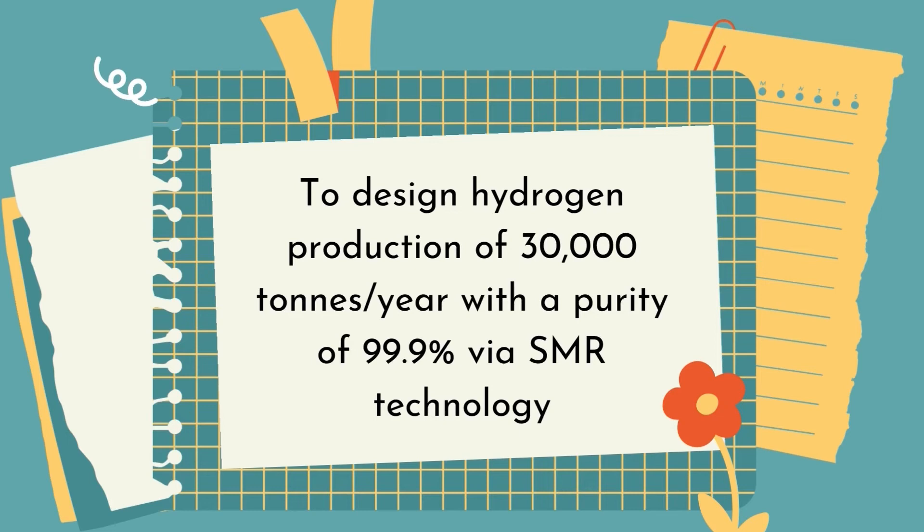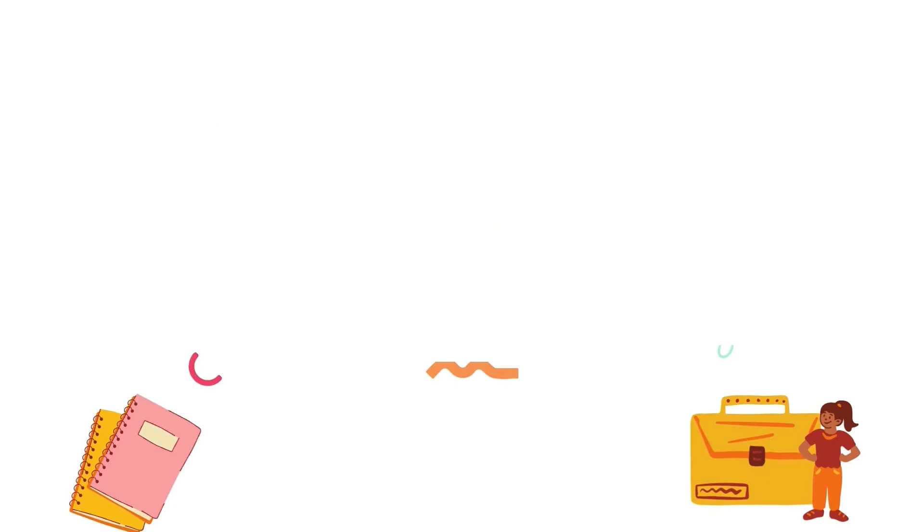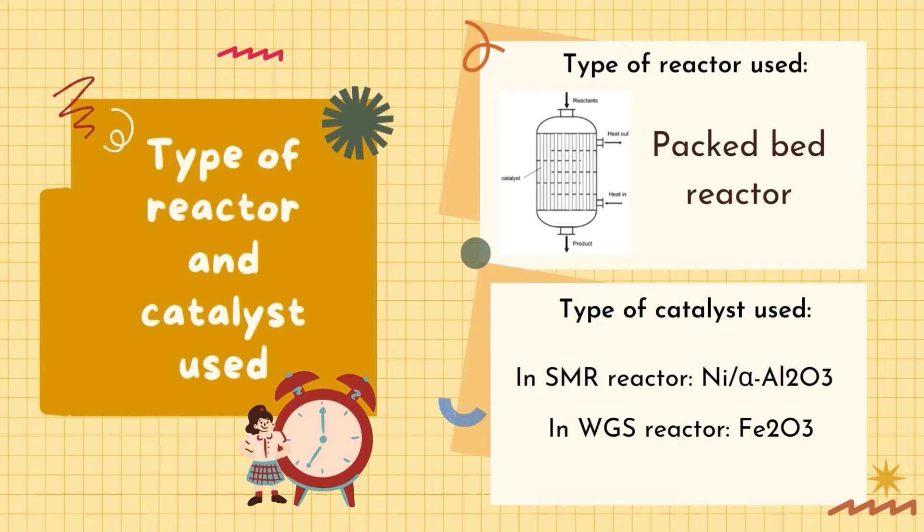For this integrated design project, we are asked to design 30,000 tons per year of hydrogen production with 99.9% purity via SMR technology. The type of reactor used in this process is packed-bed reactor, while the catalyst used is nickel on aluminium oxide for SMR reactor and iron-tri oxide for WGS reactor.